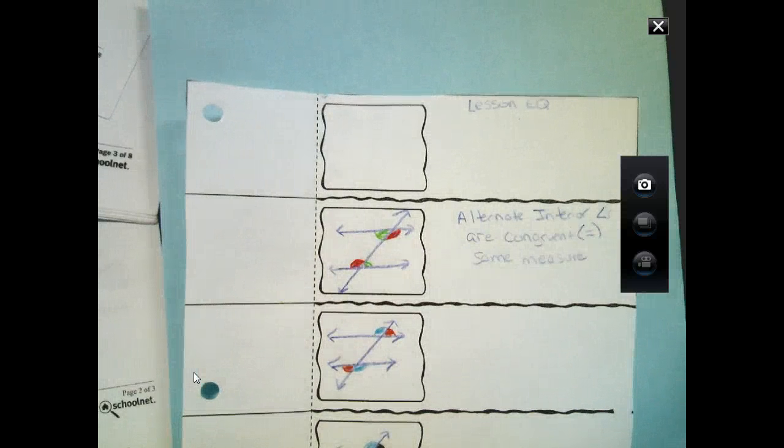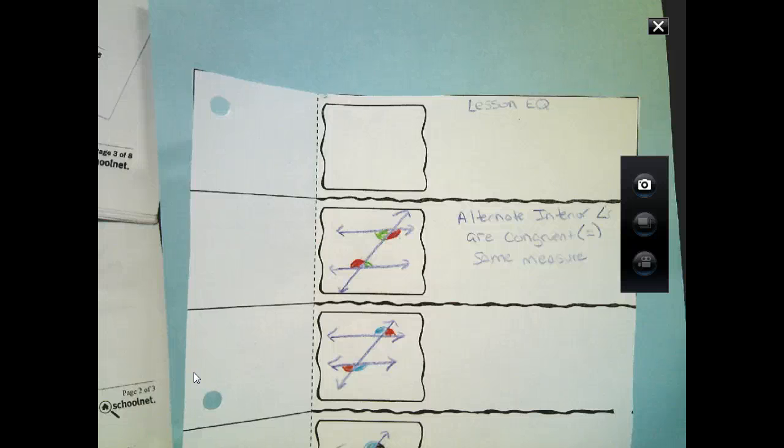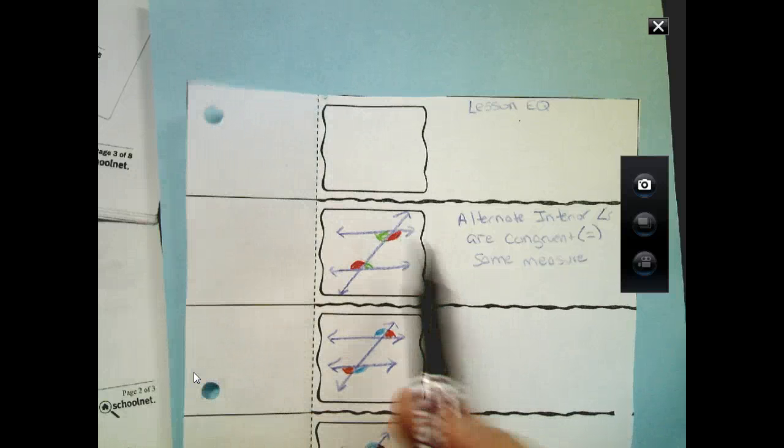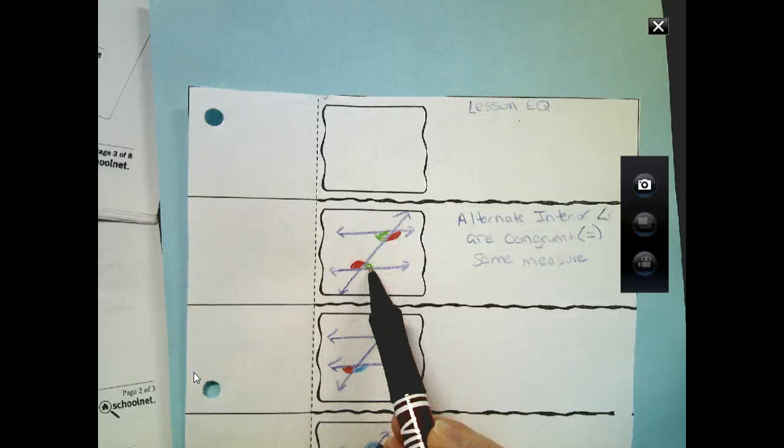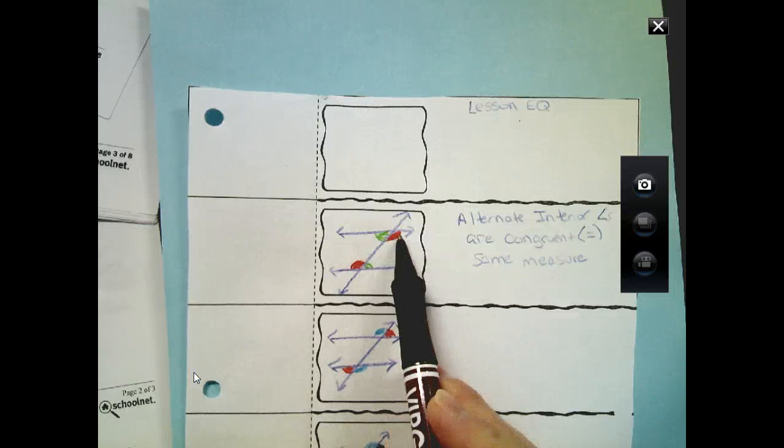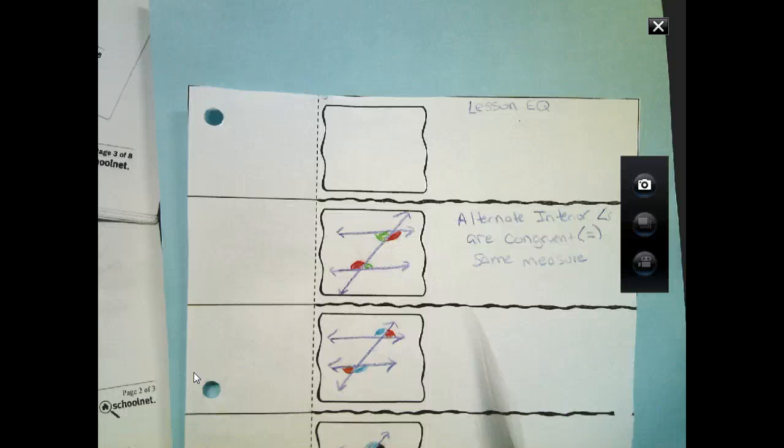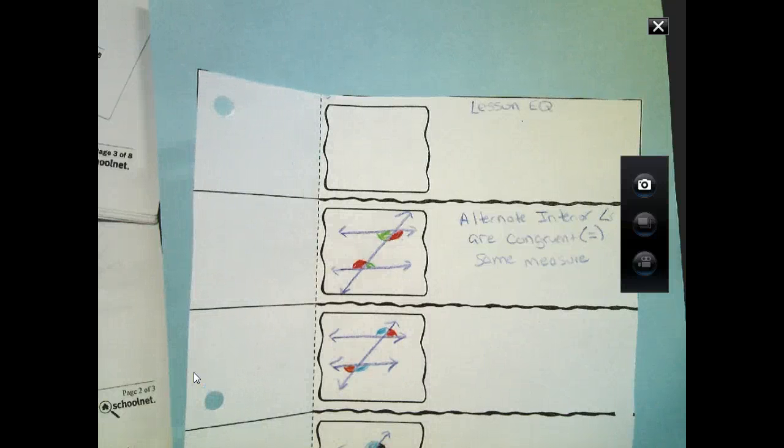And right here, I went ahead and wrote a little small note. And this is something I encourage you to do as you go through. That's what foldables are for. Alternate interior angles are congruent, which means they have the same measure. In other words, if this one's 70 degrees, this one's 70 degrees. If this one's 50 degrees, this one's 50 degrees. They're going to have the same measure. And that's what congruent is talking about.